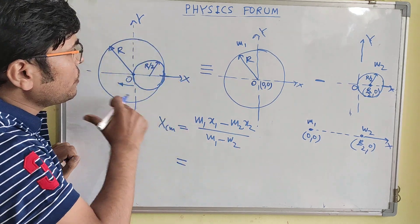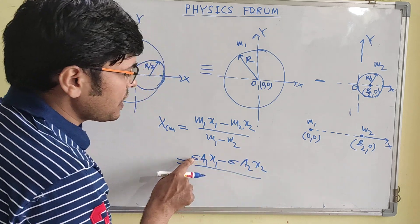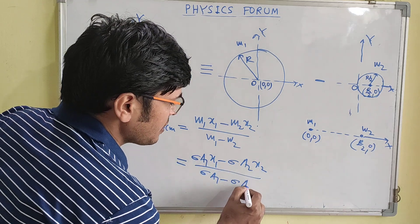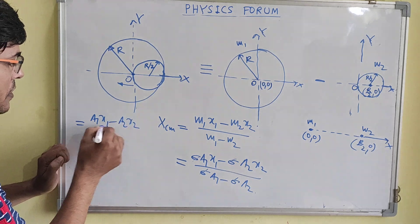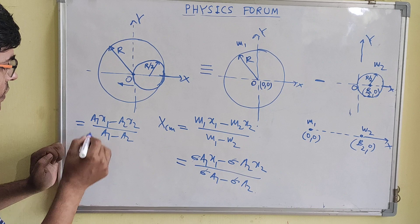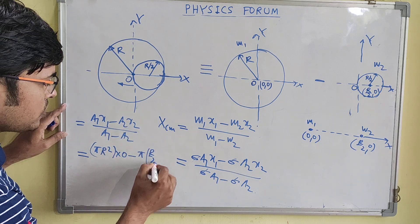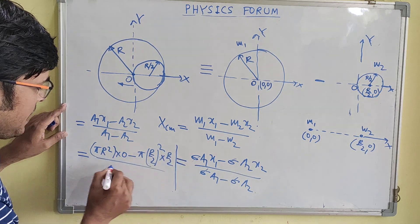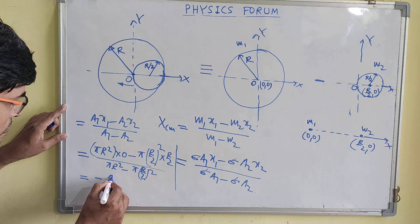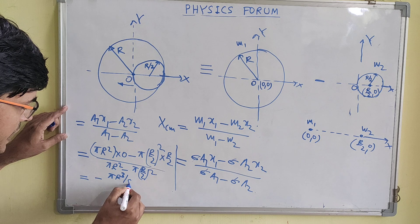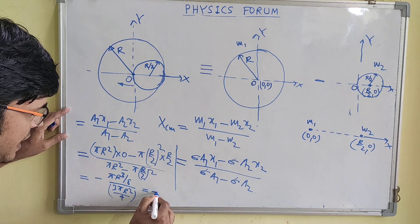As this is a uniform disk, m1 can be written as sigma*a1 and m2 as sigma*a2, where sigma is surface mass density. So xcm becomes (a1*x1 − a2*x2) / (a1 − a2). Here a1 is pi*r² and x1 is 0, and a2 is pi*(r/2)² with x2 = r/2. This gives us (0 − pi*(r²/4)*(r/2)) / (pi*r² − pi*r²/4), which simplifies to (−pi*r³/8) / (3*pi*r²/4), giving minus r by 6.